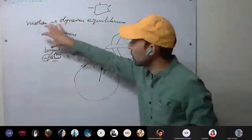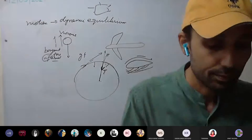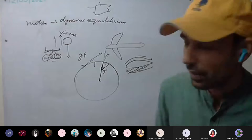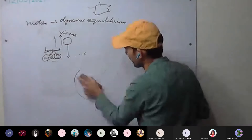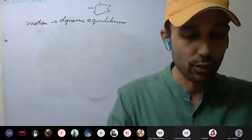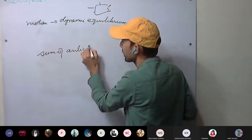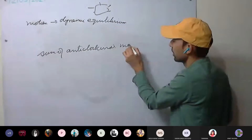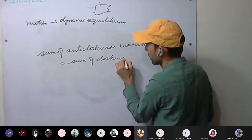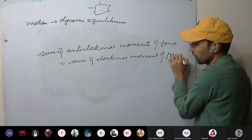It means: the sum of all the anticlockwise moments of forces must be equal to the sum of all the clockwise moments of forces. That is, if we take the algebraic sum of all moments — taking anticlockwise as positive and clockwise as negative — it will be zero. So the clockwise moment must be balanced by the anticlockwise moment.